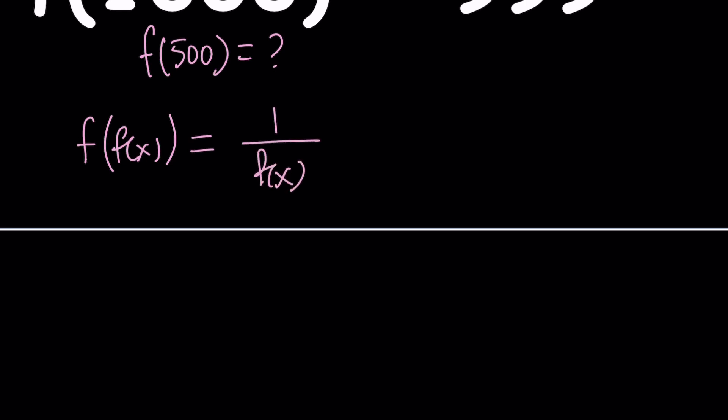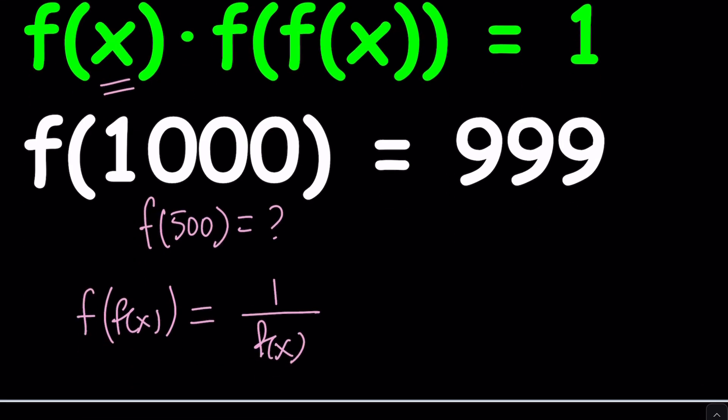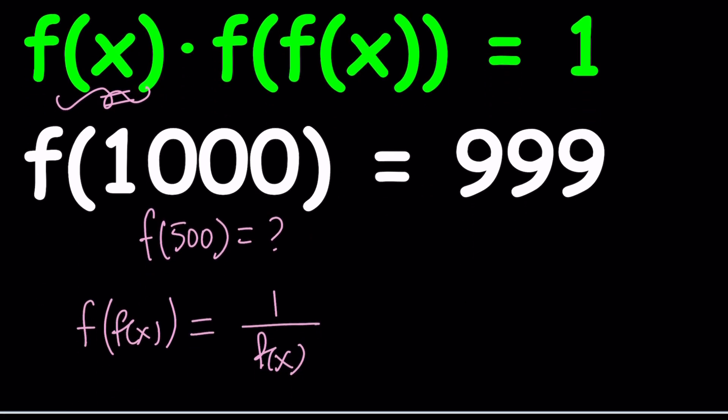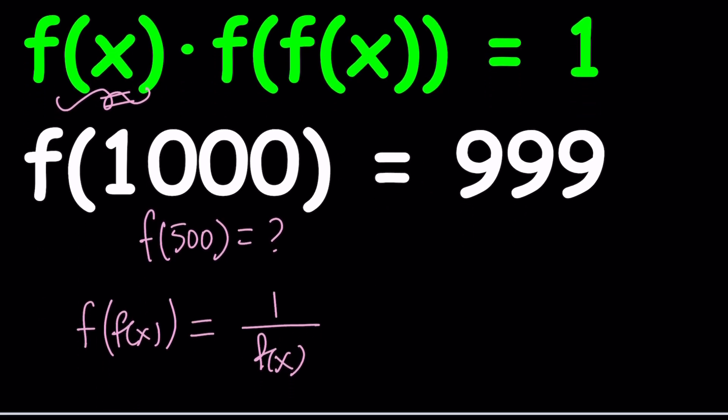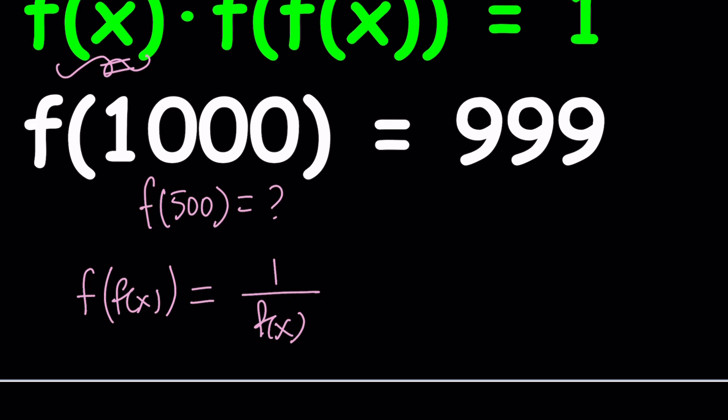Of course, you don't want f(x) to be 0. That's not allowed because if f(x) is 0 at any point, then this equation will be false — you can't multiply 0 by a number to get 1, at least in the real numbers. So what do we do? Well, we can speculate. We can ask: what if f is a power function?